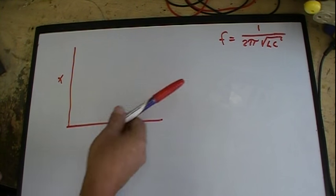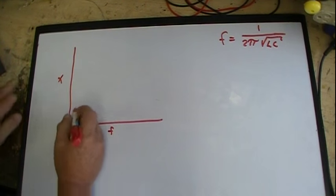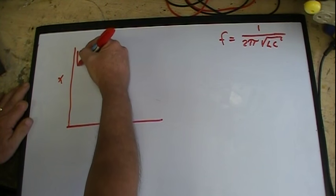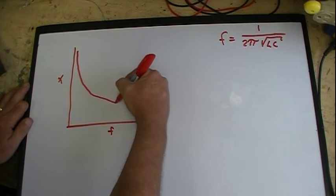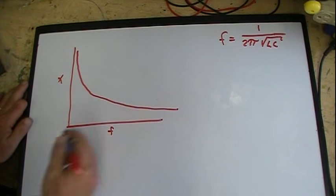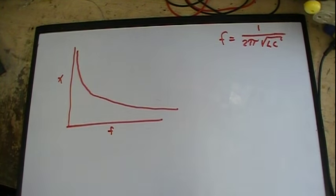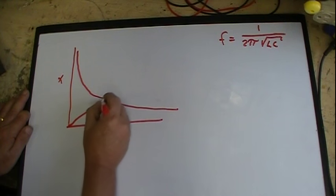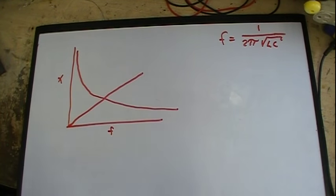When I look at capacitive reactance on a graph like this, it follows a curve, something like this. It's called a natural log curve. Inductive reactance, on the other hand, is what is known as linear, a straight line. So it follows a straight line.